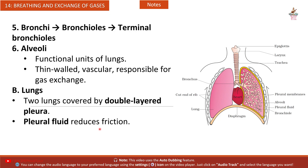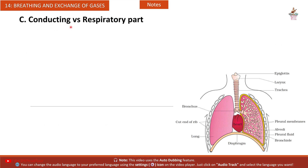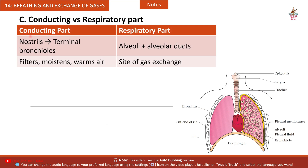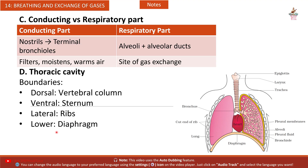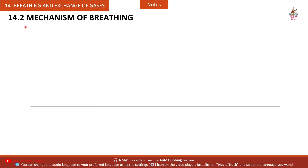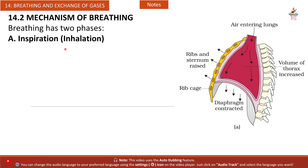Pleural fluid reduces friction. Conducting part: nostrils to terminal bronchioles — filters, moistens, and warms air. Respiratory part: alveolar ducts and alveoli — site of gas exchange. Thoracic cavity boundaries: dorsal vertebral column, ventral sternum, lateral ribs, and lower diaphragm. Volume changes of the thorax drive breathing.